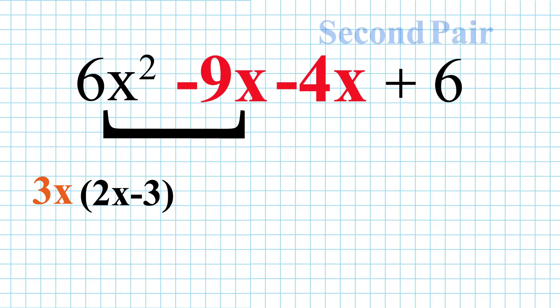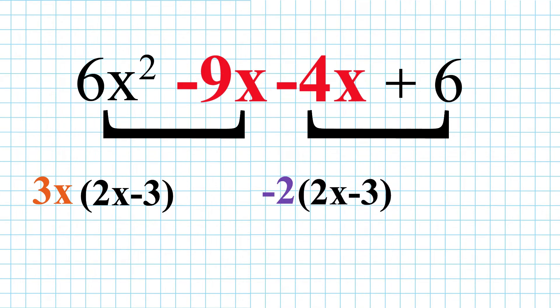Now, for the second pair, minus 4x plus 6, we can take 2 as the common factor and it will be written as minus 2 multiplied by 2x minus 3. Now, if you look at this expression carefully, it again has a common factor which is written inside the bracket.